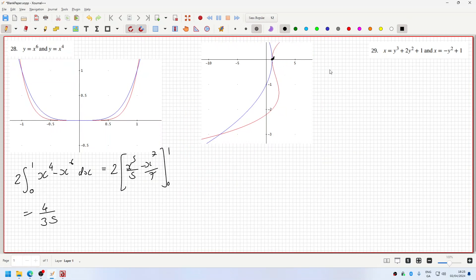This region here. Definitely the cubic minus the quadratic, for sure. Y cubed, 1 minus 1 is gone, plus 3y squared dy. Now what about the limits? So we've got to solve y cubed plus 2y squared plus 1 equals minus y squared plus 1. Well the ones cancel, so that's y cubed plus 3y squared equals 0. So that's y squared, y plus 3 equals 0.